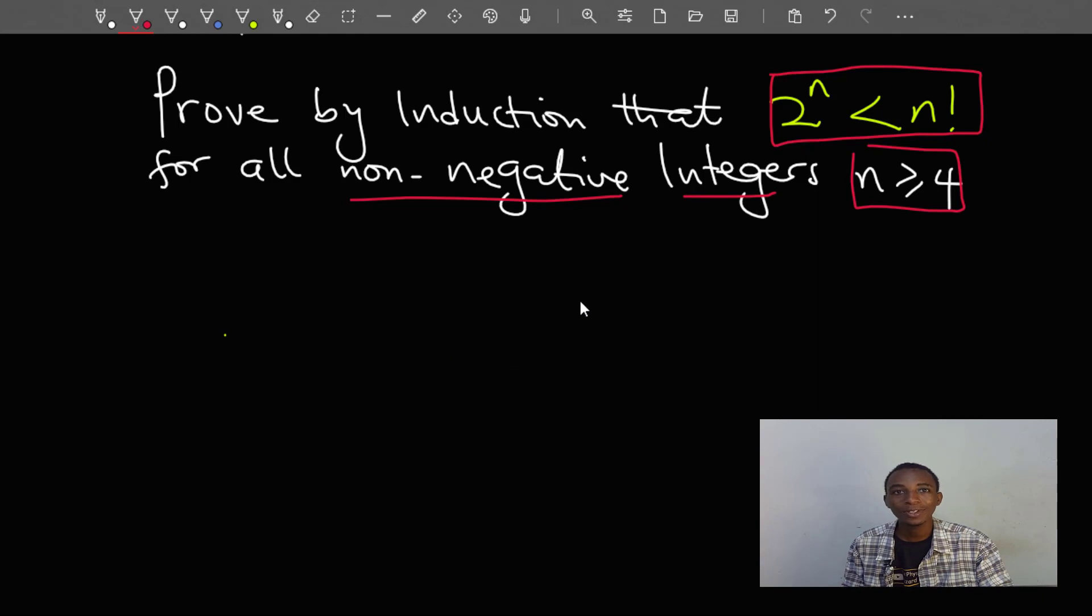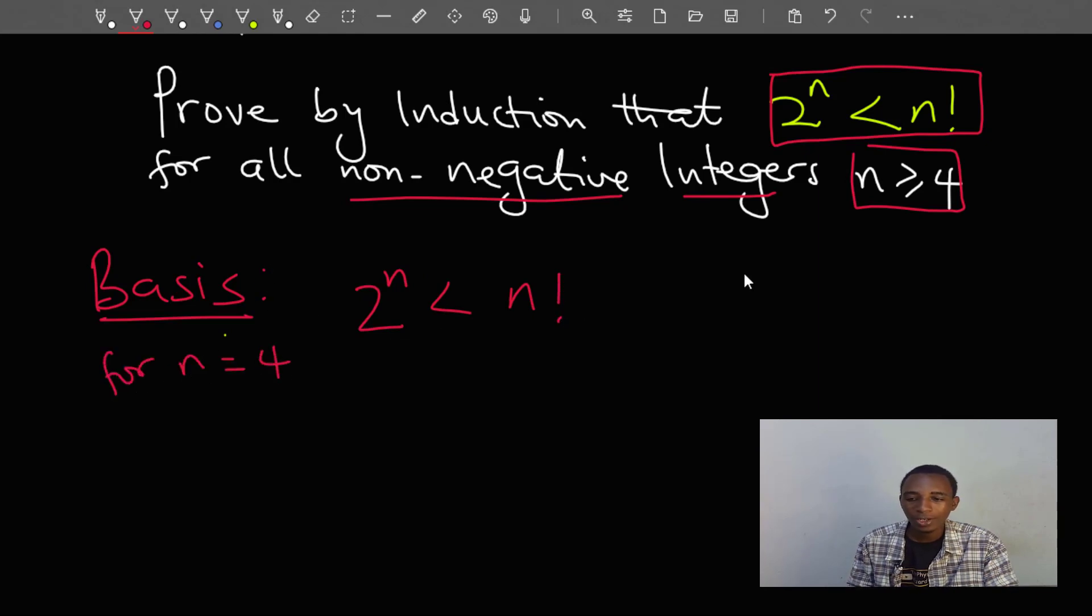So let's get started. With all problems of proof by induction, we have to begin with the basis step. For the basis step we simply test that the proposition is true by testing it with some known value in the range. It's always nice to test with smaller values. So we have 2 to the power n is less than n factorial. Let's test for n equals 4.